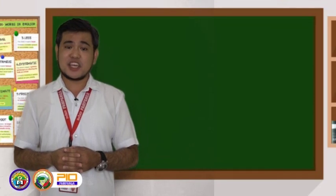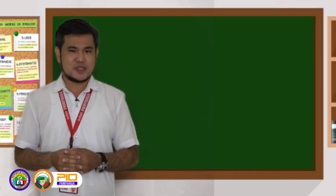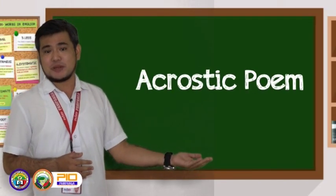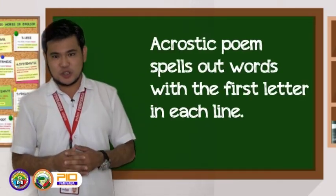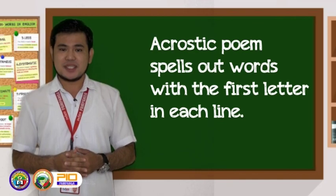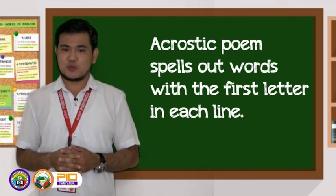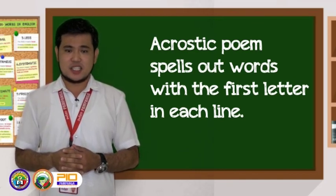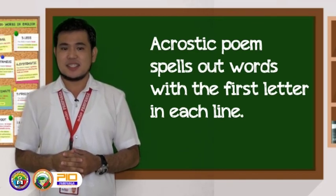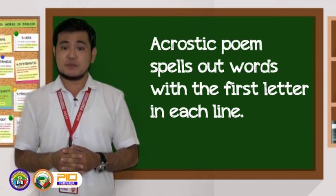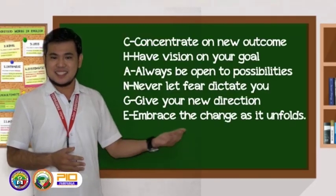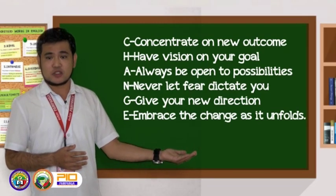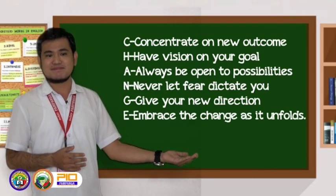Our last type is very familiar to you — the acrostic poem, also called a name poem. It spells out words using the first letter in each line and describes someone or something. This is an example of an acrostic poem.